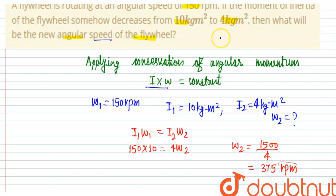1500 upon 4 equals 375 rpm. So when the moment of inertia decreases to 4 kgm², the angular speed increases to 375 rpm. This is the answer. Thank you.